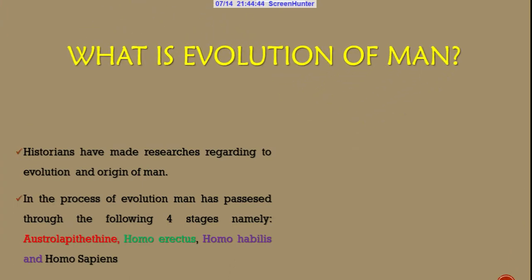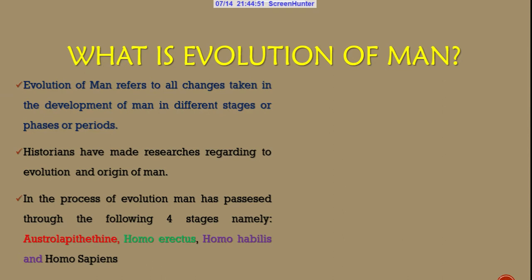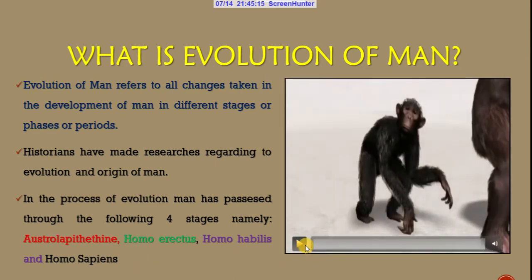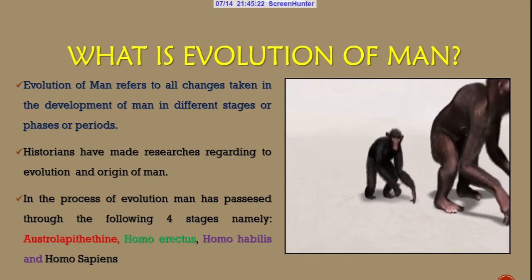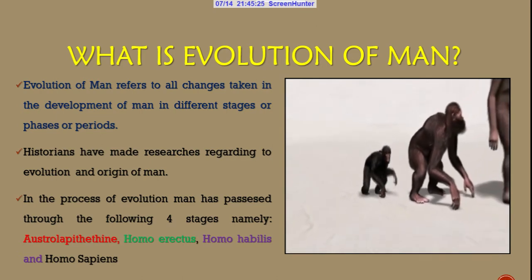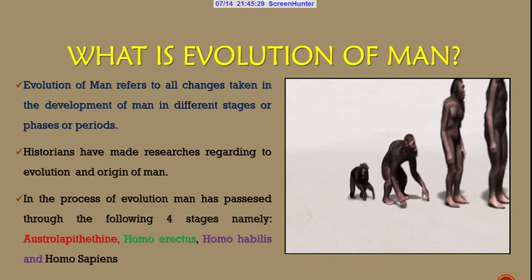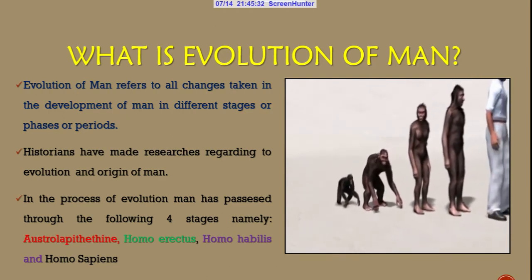What is the evolution of man? Evolution of man refers to all changes taken in the development of man in different stages, phases, or periods. Historians have done countless researches regarding the evolution of man. In the process of evolution, man has passed through four different stages: Australopithecus, Homo erectus, Homo habilis, and Homo sapiens.